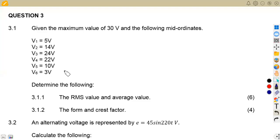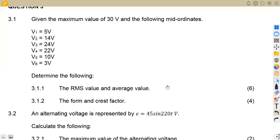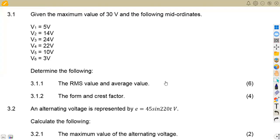Hello guys, welcome back to Mason African Motives. We're still working on industrial electronics, applying our AC theory — that is alternating current theory. We've got our question paper from November 2018 that we are going to consider here, question number three.